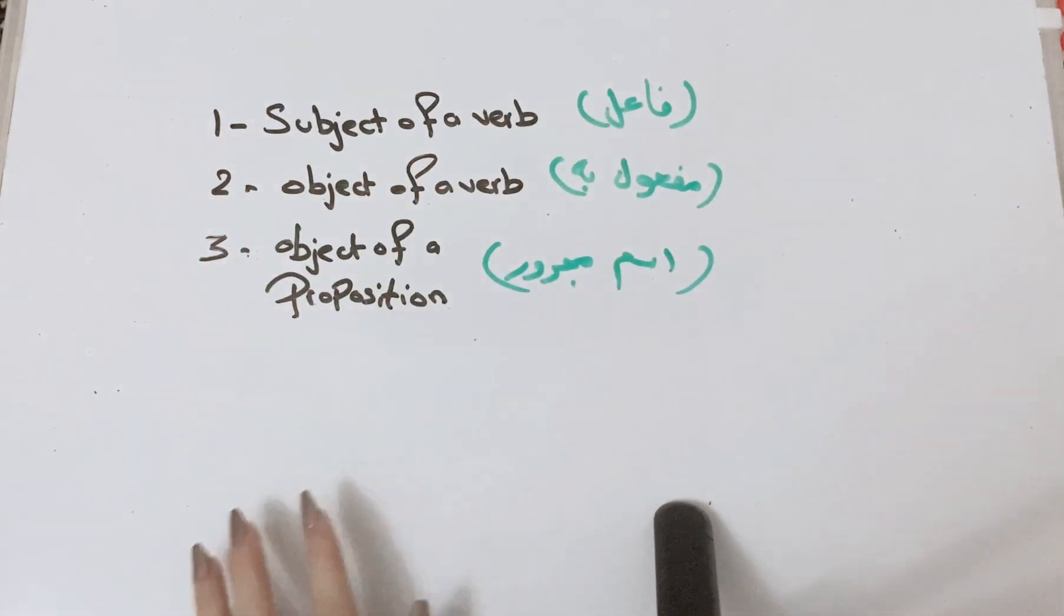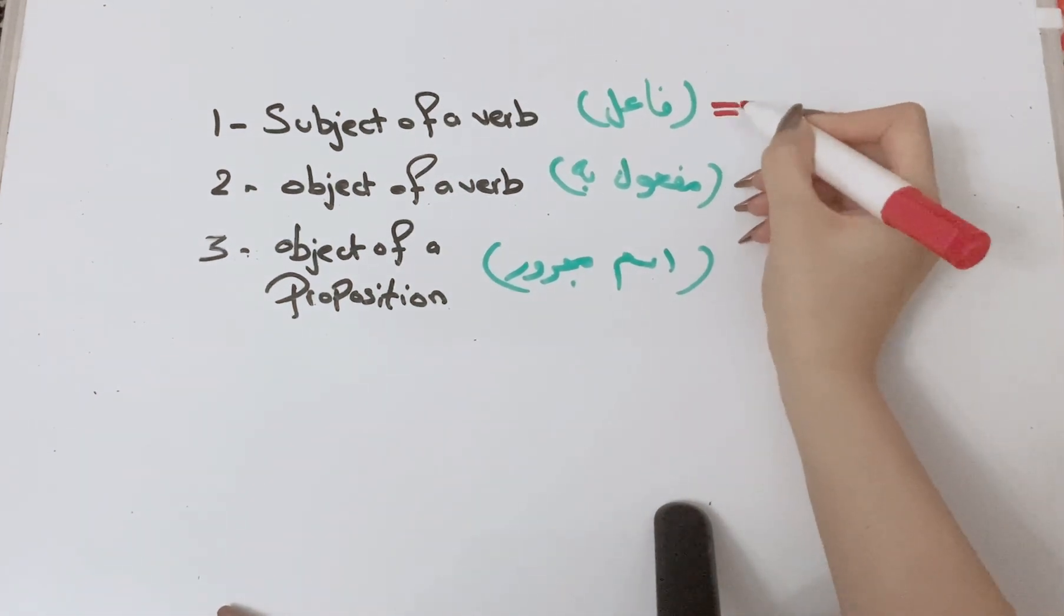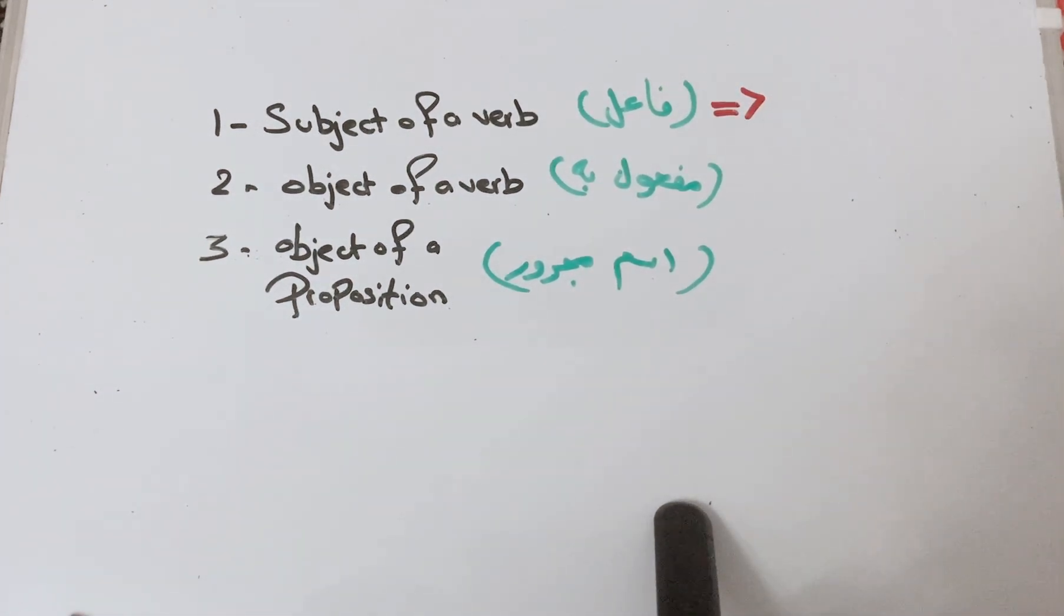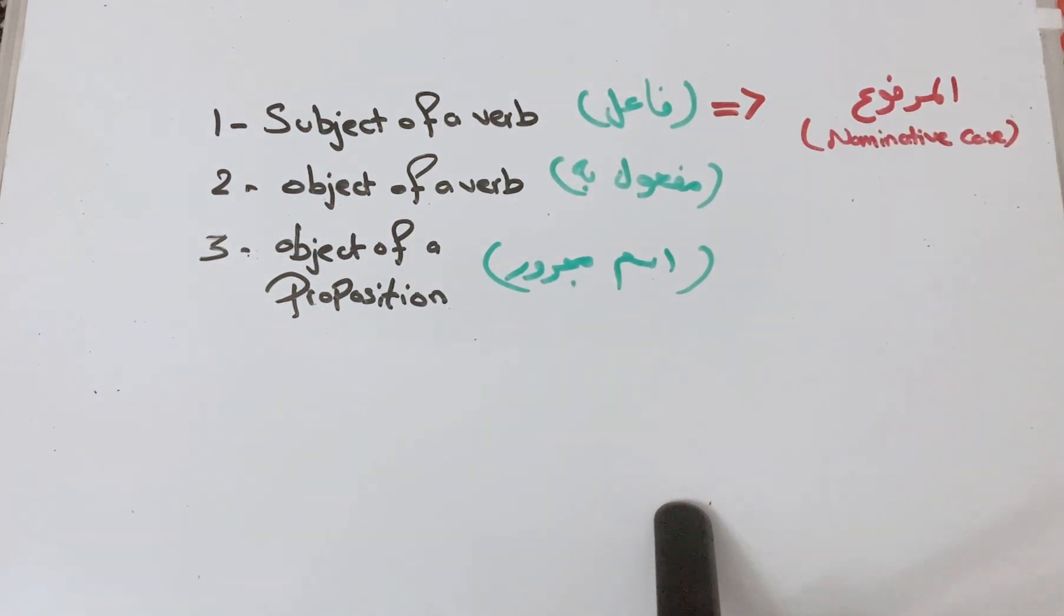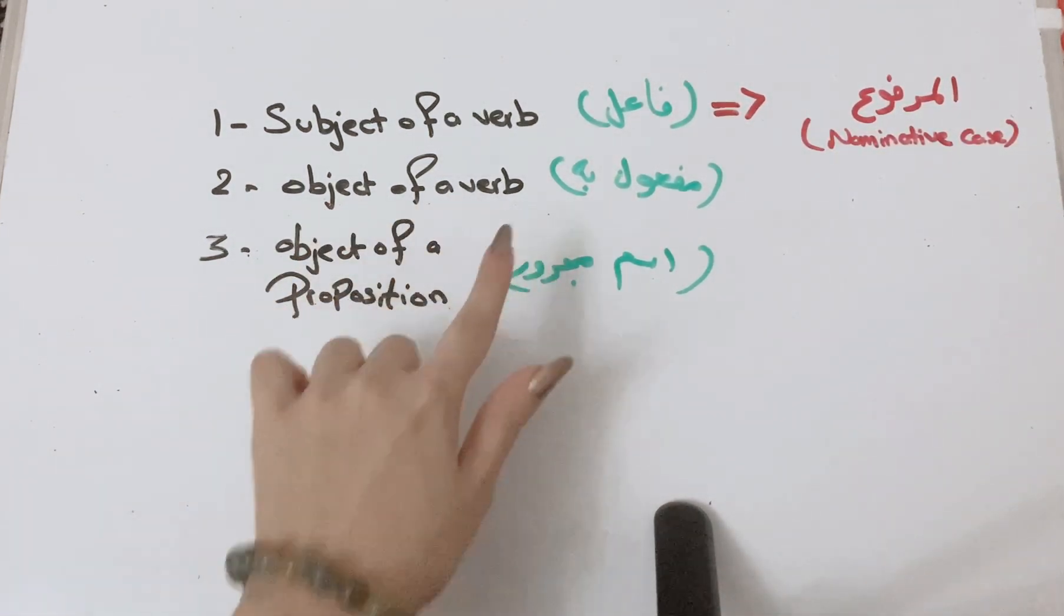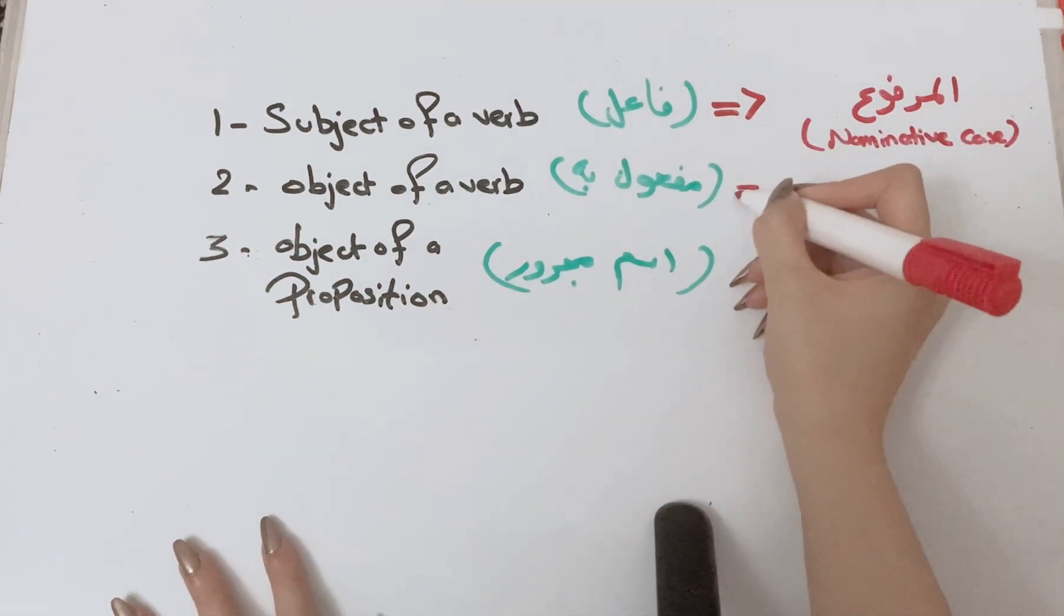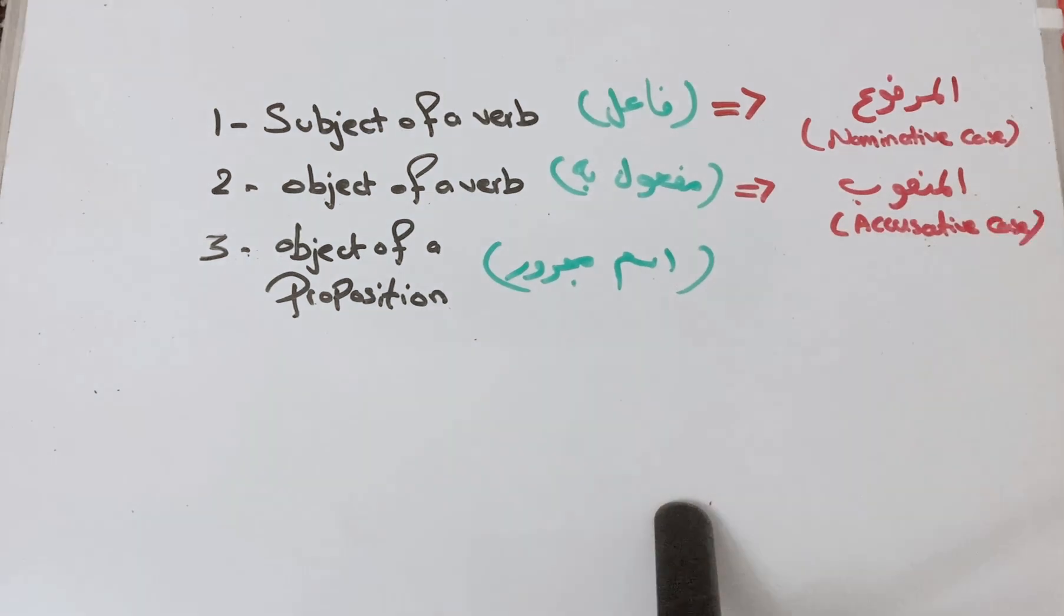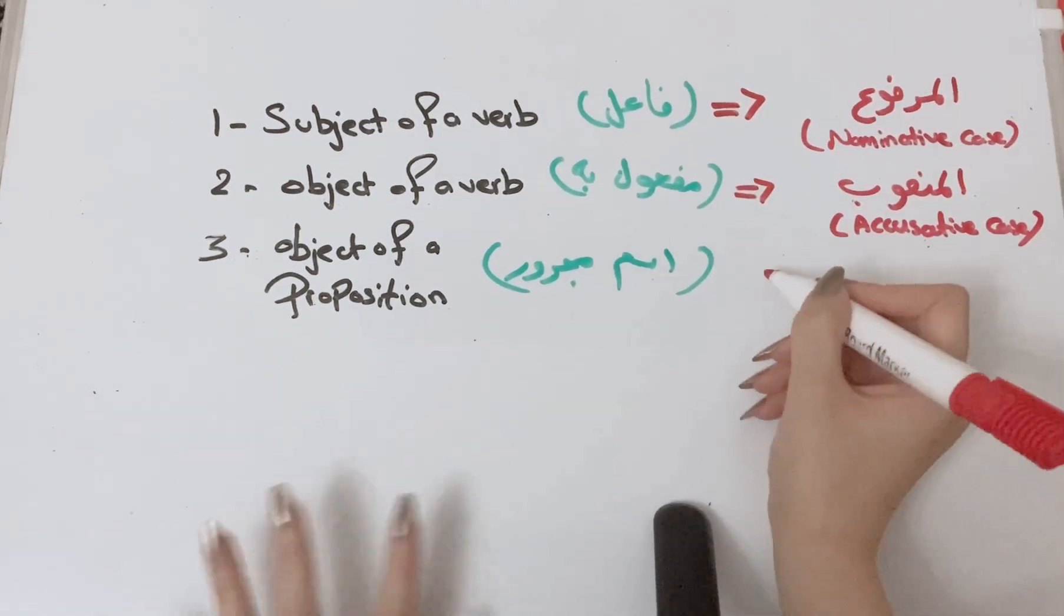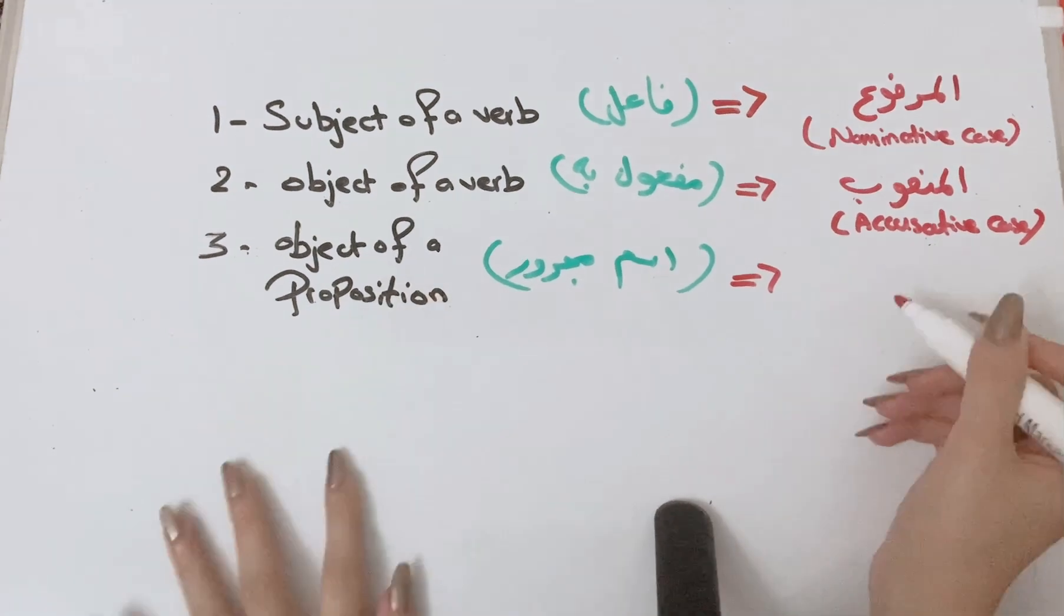Whenever you extract and find the subject of a verb, it's going to always function the noun as nominative case. And for the object of a verb, the mafoil, it would function the noun as mansoob accusative case. Object of a preposition is majroor, genitive case.